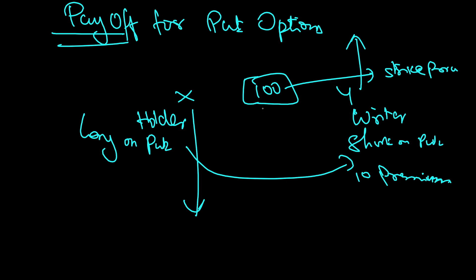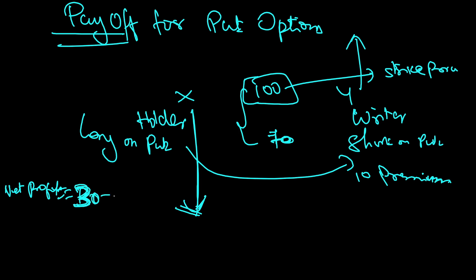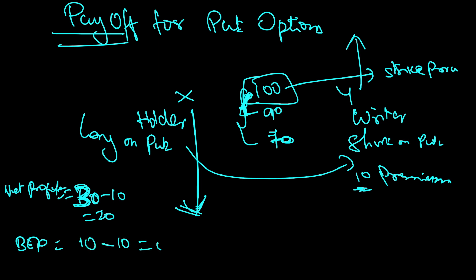The holder wants the price to go down. The price comes down to 70. So the profit is 100 minus 70 = 30, but he paid a premium of 10, so his net profit is 20. The break-even point is when there is no profit or loss — when the price reached 90, he got a profit of 10 which offset his premium of 10, so net profit and loss is zero.